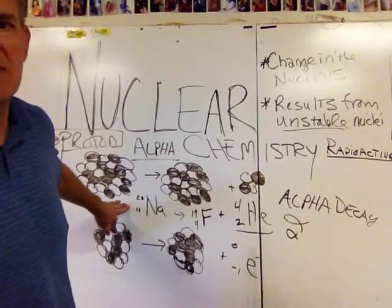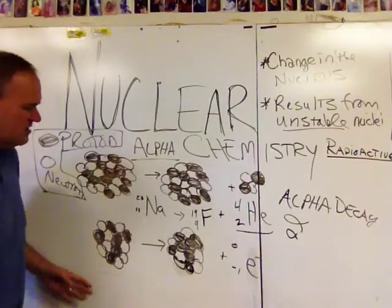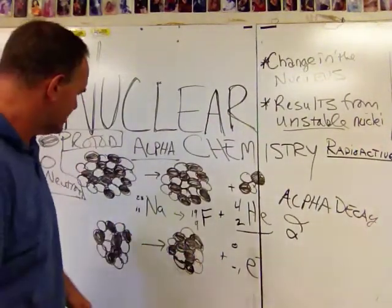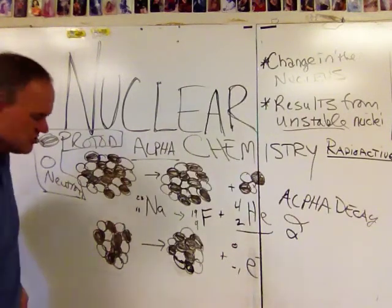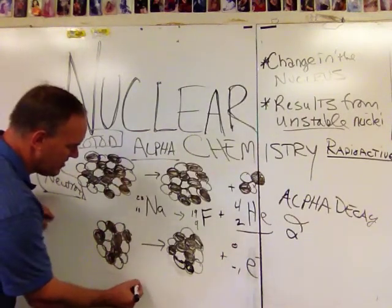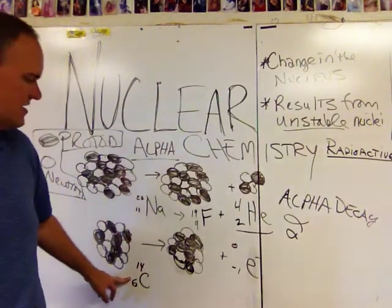That's one kind of radioactive decay. Another really common one that we need to know about is illustrated in this next example. We have six protons and eight neutrons. So if we draw that nuclear symbol, we would see that its symbol would look like this.